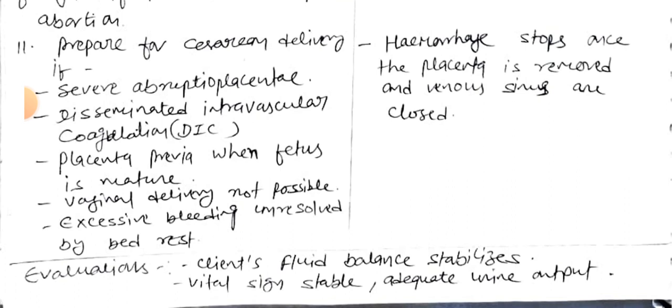Evaluation for nursing diagnosis one: the client's fluid balance is stabilized. Through our different interventions, the deficient fluid volume has been corrected — vitals are stable and there is adequate urine output. Our goal is achieved.